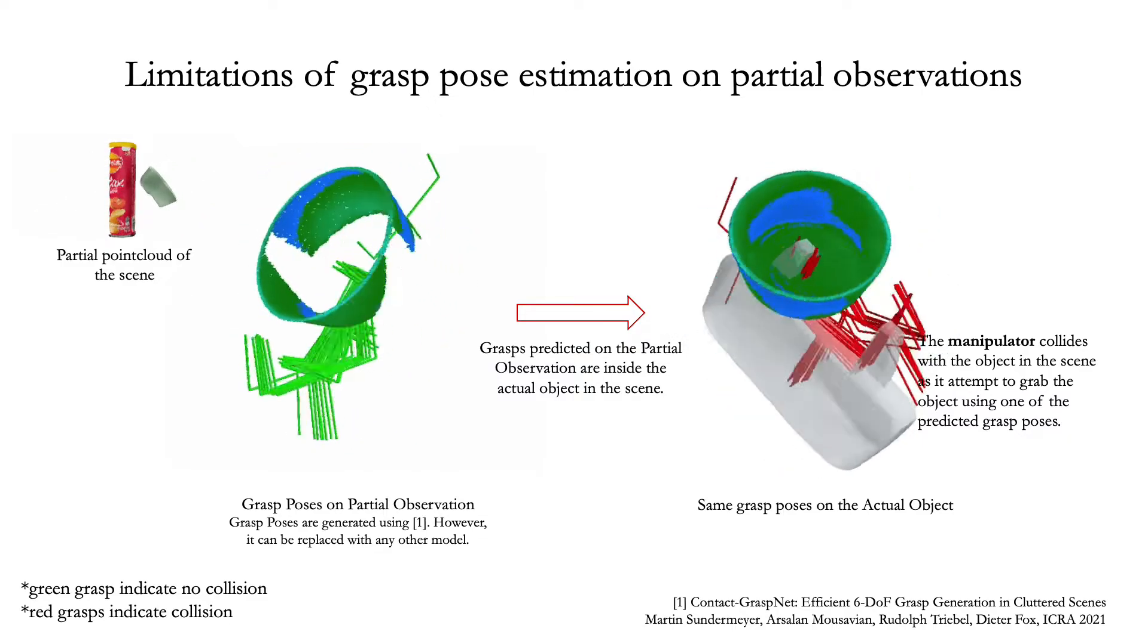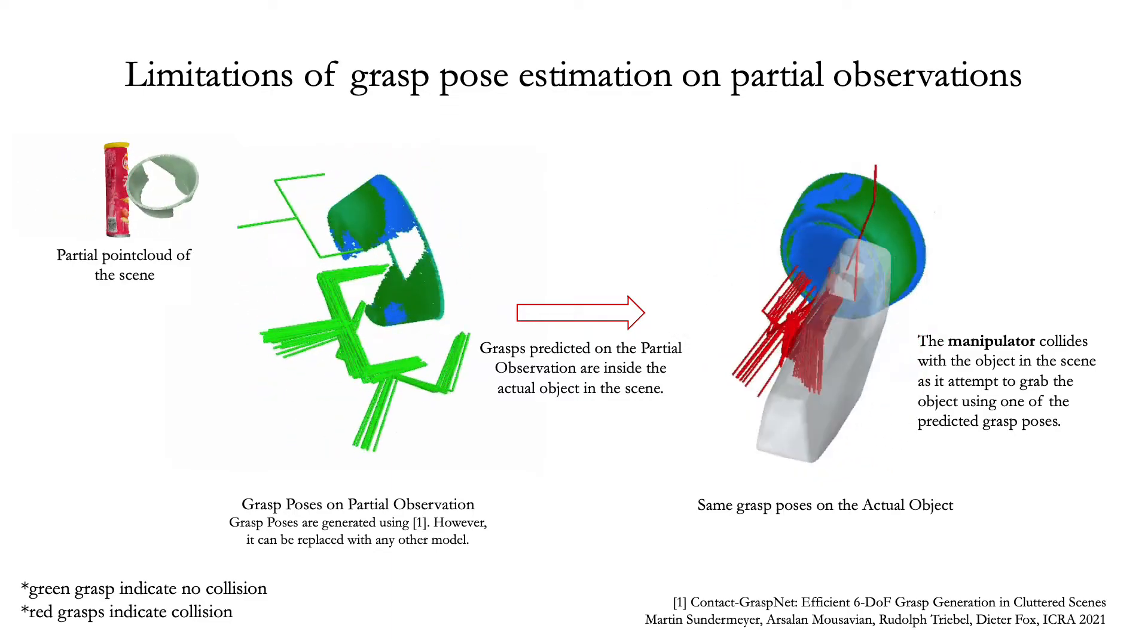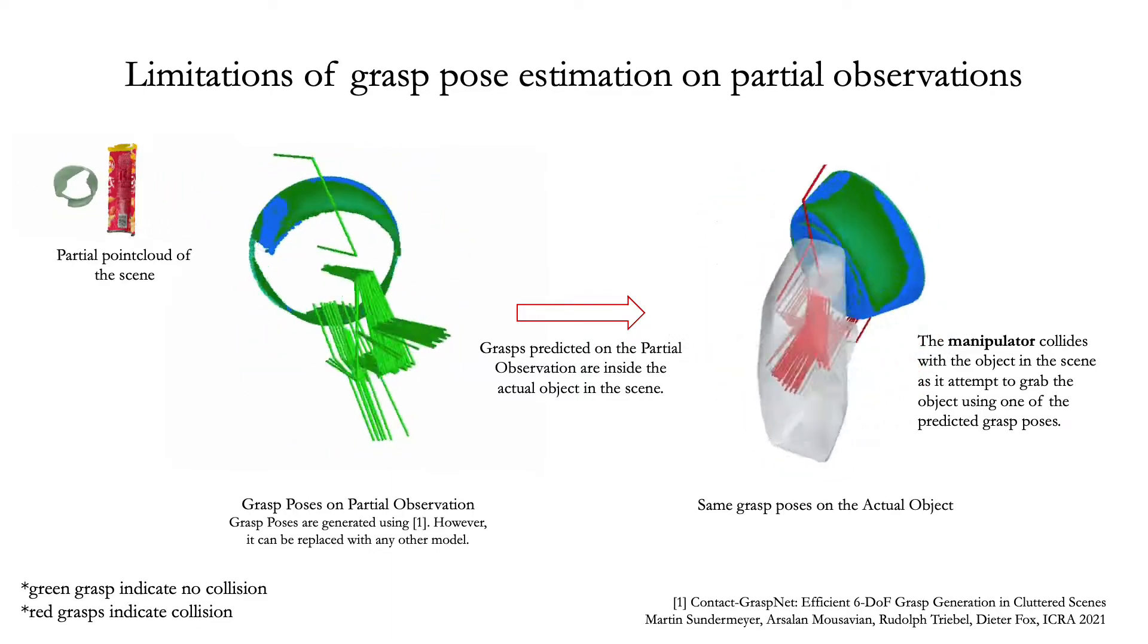As a result, the manipulator, indicated by the gray fingers, collides with the object as it tries to grab the object using one of these grasp poses.